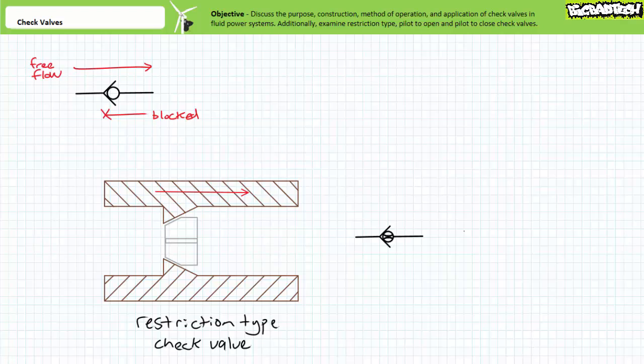First, the leak in the ordinarily block direction isn't uncontrolled, but rather a measurable, predictable quantity. The restriction type check valve is therefore a means of flow control.